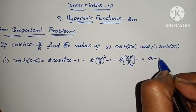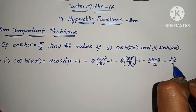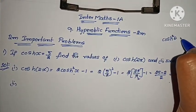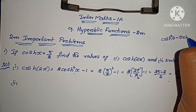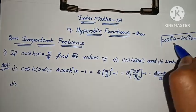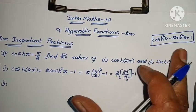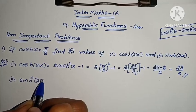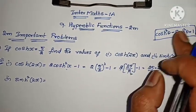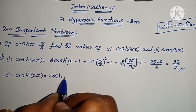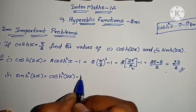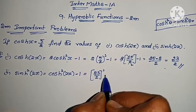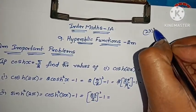Continuing: 25/2 − 1 = 23/2. So cosh(2x) = 23/2. Next, for sinh(2x), we use the hyperbolic identity: cosh²(2x) − sinh²(2x) = 1, so sinh²(2x) = cosh²(2x) − 1. The value of cosh(2x) is already 23/2, so cosh²(2x) = (23/2)² − 1.